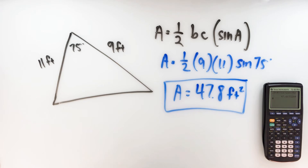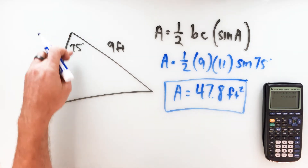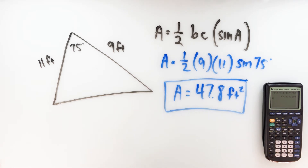So the area of this triangle is 47.8. This is an area and we are in feet, so we'll write it as square feet. Think of how much of a time saver this is. If I were to find the area using half base times height, I'd first have to decide what my base is, then find a height perpendicular to that base — and I've got no right angles here. So this alternate formula really saves us some time; you can just use the two sides and the angle in between.